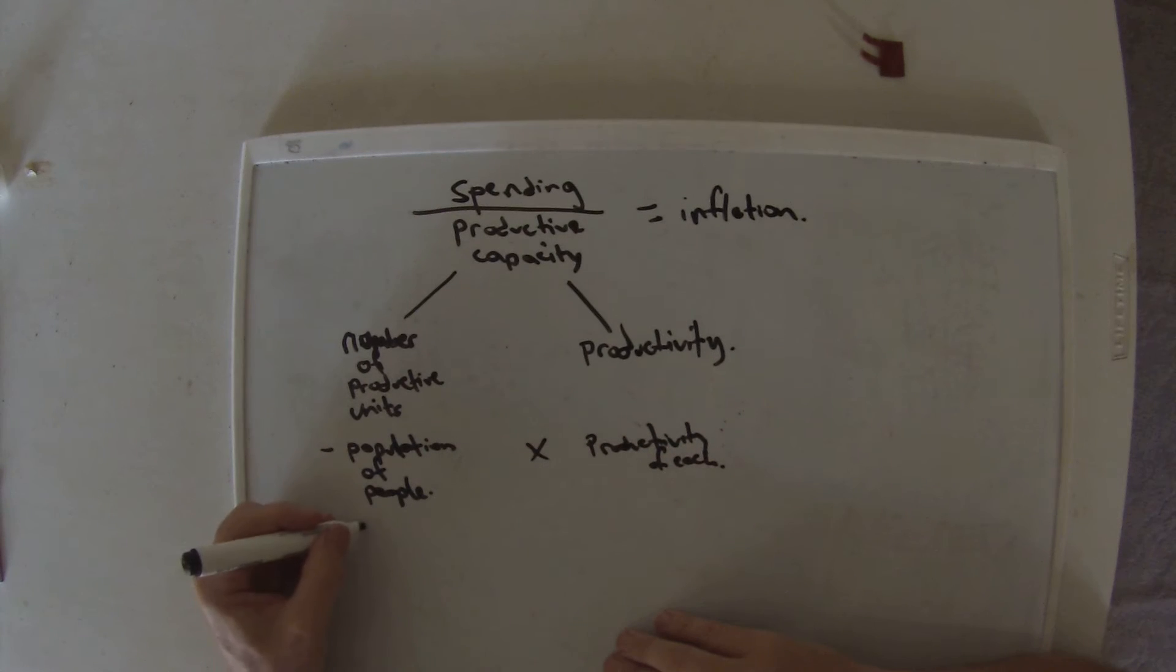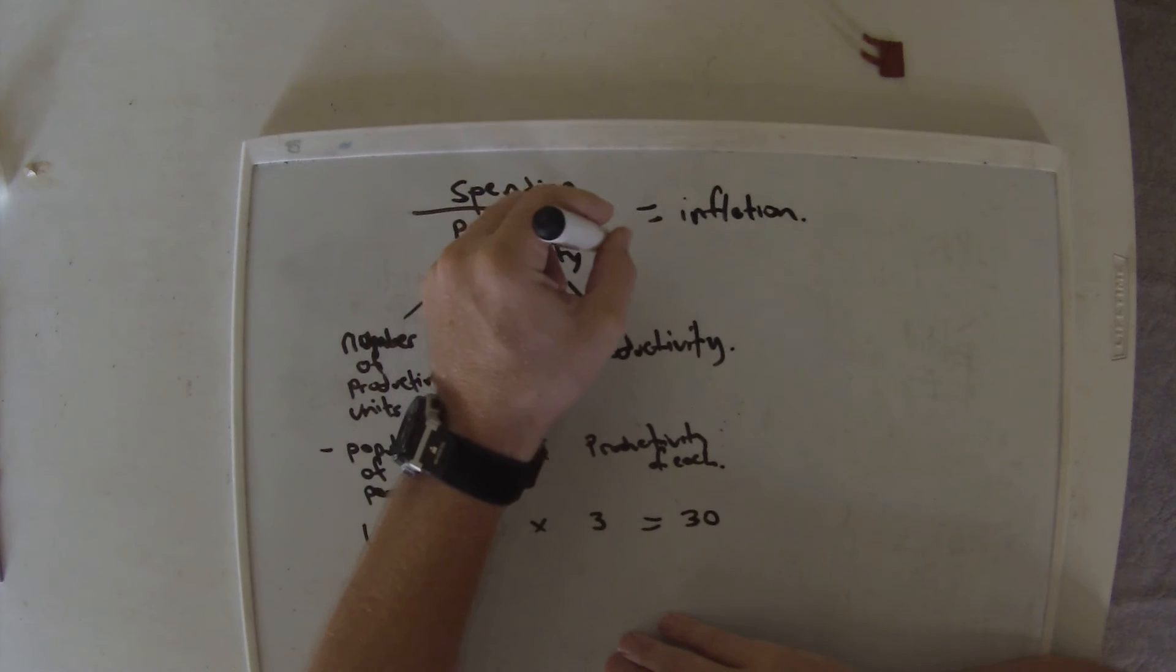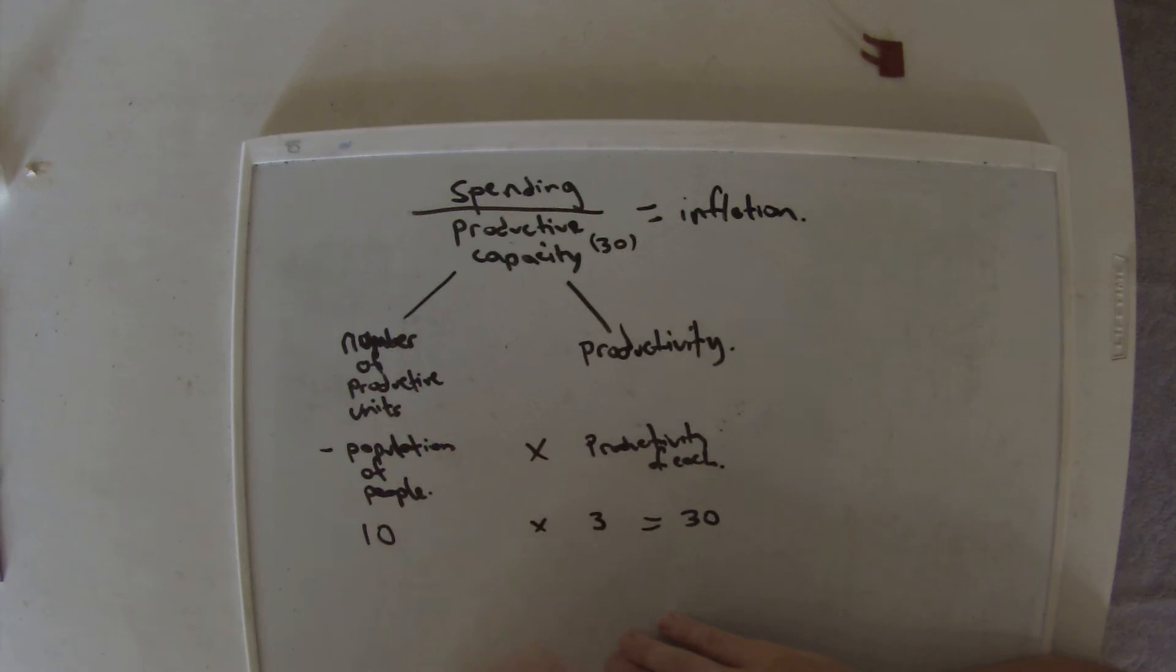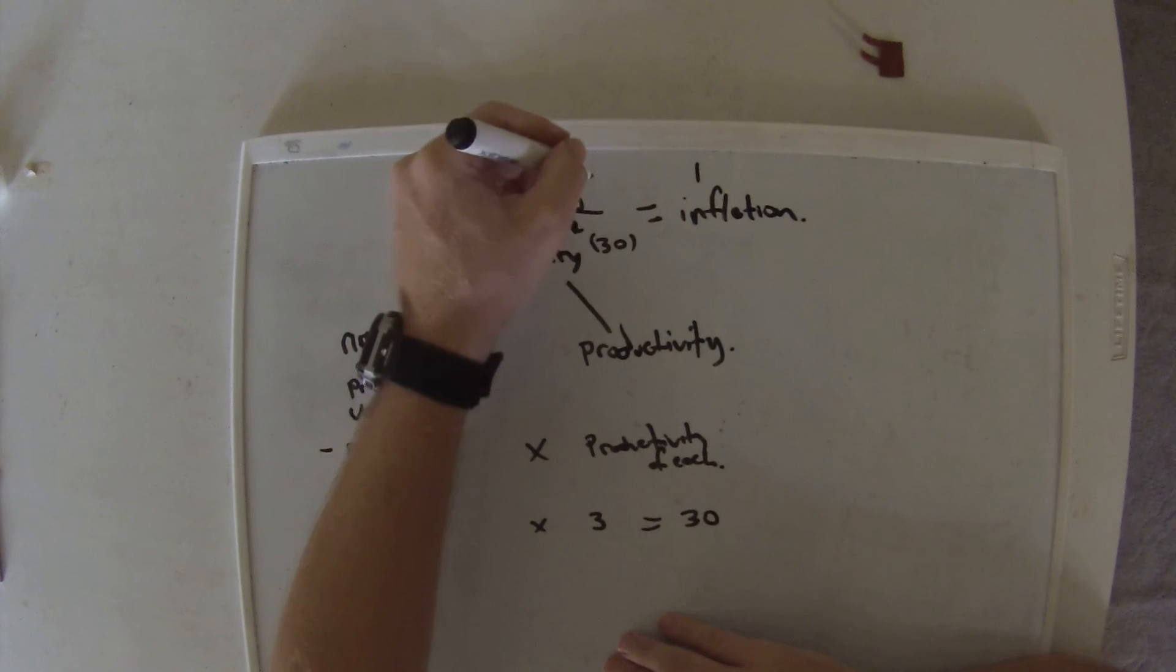So let's just say we had a population of 10 people and they were able to produce 3 widgets per person. The total productive capacity is just the multiple of those which is 30. If we bring that back up here and put it into 30, then to get our inflation target of 1 what we have to have in spending is 30, and that's our base case.